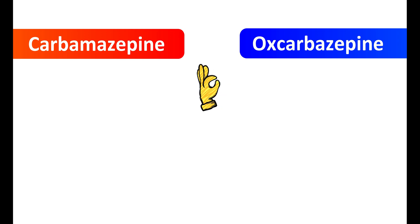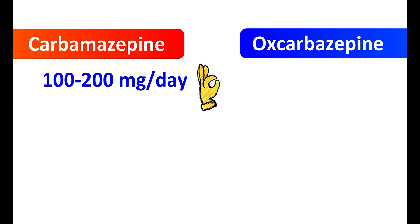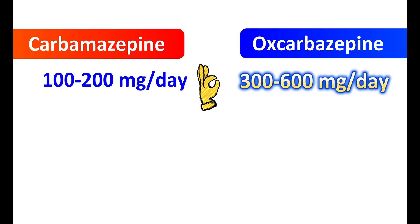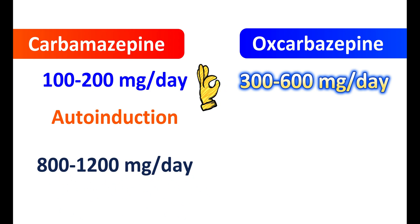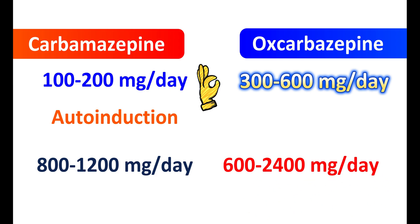Both carbamazepine and oxcarbazepine should be started at a low dose for better tolerability. However, the starting dose of carbamazepine is somewhat less compared with oxcarbazepine — it can be started at 100 to 200 mg per day, whereas oxcarbazepine requires a starting dose of 300 to 600 mg per day. Oxcarbazepine has a shorter half-life, so it needs more dose adjustments. Carbamazepine can show autoinduction, meaning it can induce its own metabolic enzymes and increase its own metabolism with longer use. The maintenance dose of carbamazepine is 800 to 1200 mg per day, whereas oxcarbazepine is 600 to 2400 mg per day. Both medications can be given twice daily.